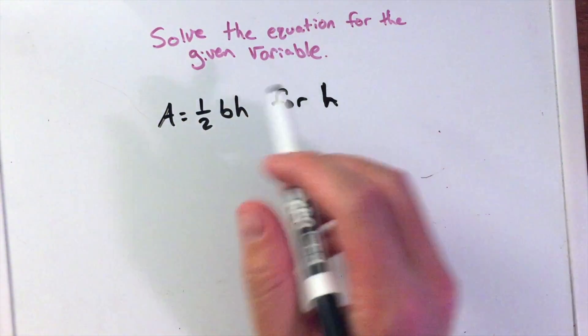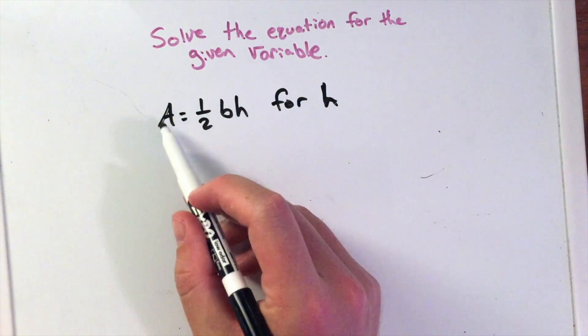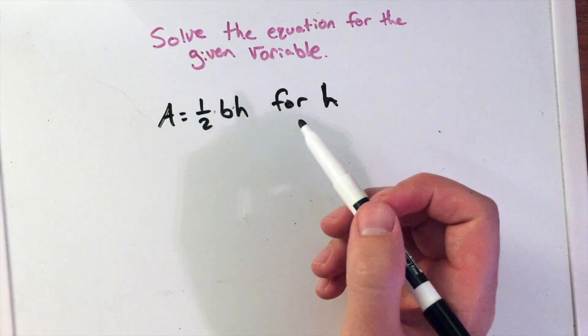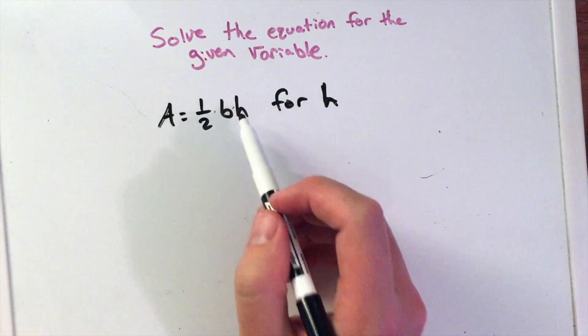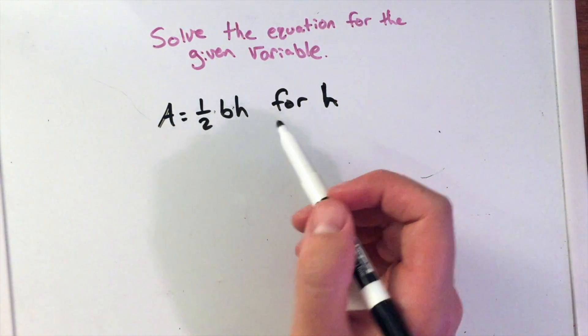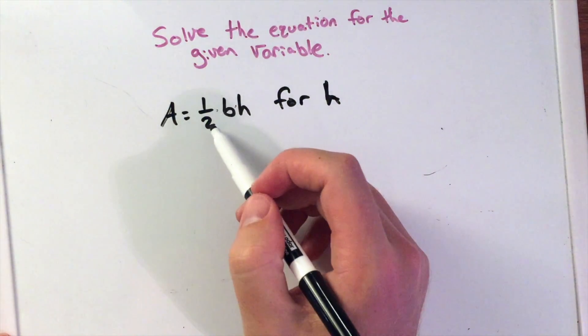So to get h by itself, we have this 1/2 base times height. We notice that there's multiplication between the 1/2 and the b and the h. The opposite of multiplication is division, but that might not help us here because we have a 1/2.